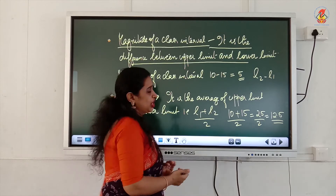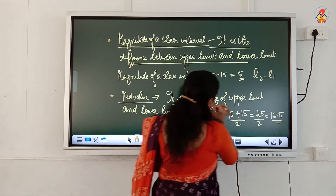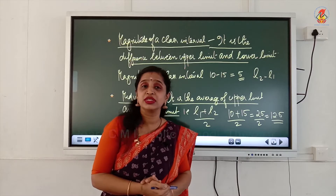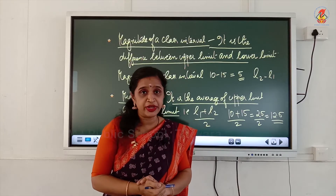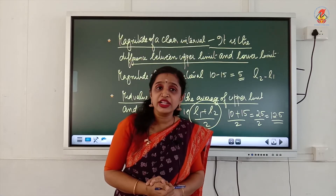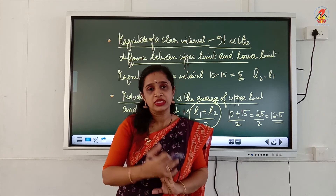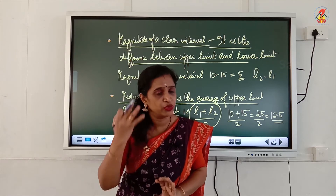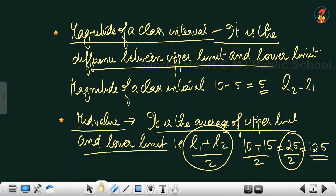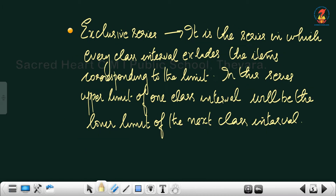The next concept is 'mid value.' The average of the upper limit and the lower limit is known as the mid value. For the class 10 to 15, the formula is L1 plus L2 divided by 2. So 10 plus 15 divided by 2 equals 25 divided by 2, which is 12.5. Therefore, 12.5 is the mid value of that particular class interval.